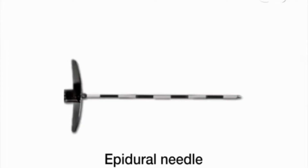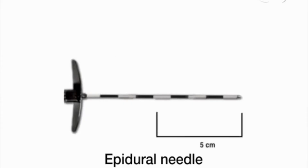First, refer to the markings on the needle to note the depth at which the needle has entered the epidural space. For example, if you insert a 9-centimeter epidural needle and 4 centimeters of the needle remains outside the patient's skin, the distance from the skin to the epidural space is 5 centimeters. Note that longer epidural needles are available for use in obese patients.